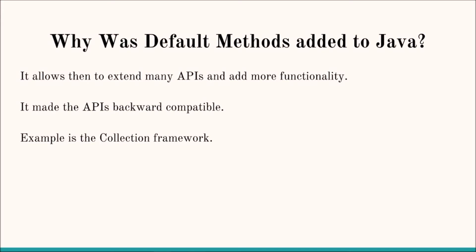A concrete example is the Collections framework. In Java 8, the Collections framework added a new method called forEach in the Iterable interface. You can look this up on the Oracle site. Using forEach, you can iterate through all collections and perform various actions. To accommodate these new additions in Java 8, especially in the collection framework, Java 8 introduced the concept of default methods.